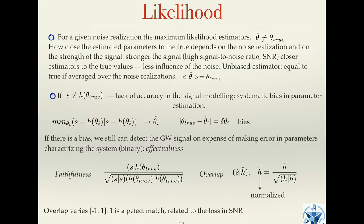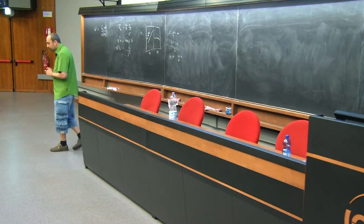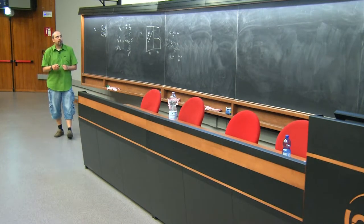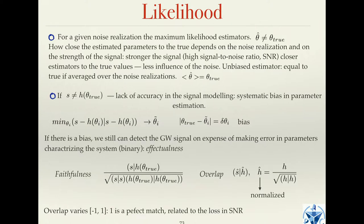When your model is not exact, you can ask: what are the parameters minimizing the correlation? Imagine data without noise — just a signal — and you maximize the likelihood, getting parameters bringing H as close as possible to S. The difference between the true parameter and your estimate is called bias, because of inaccuracy in your model. The best estimate of your parameters might be shifted from the true value.